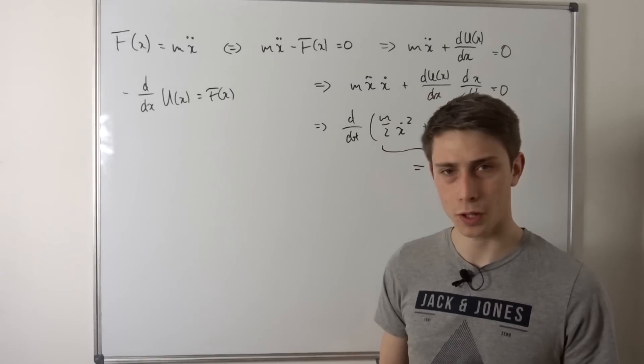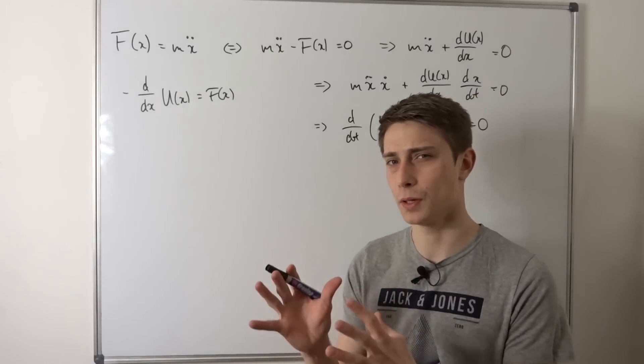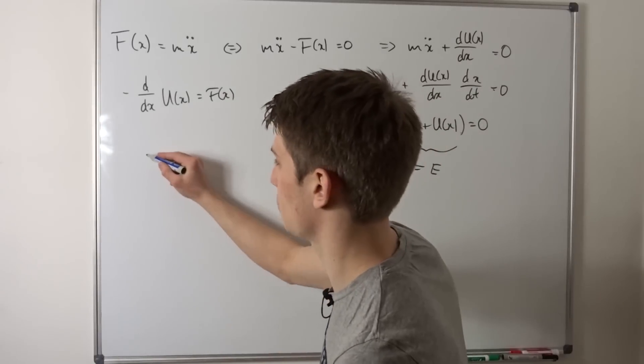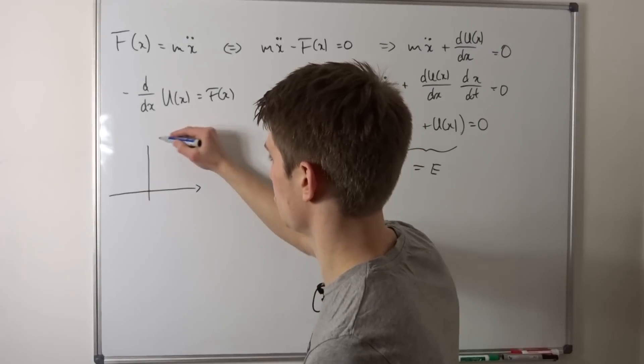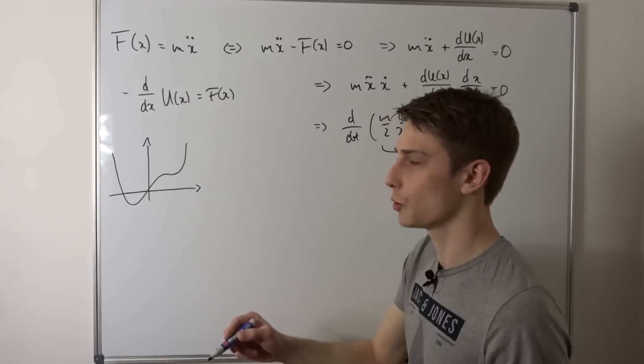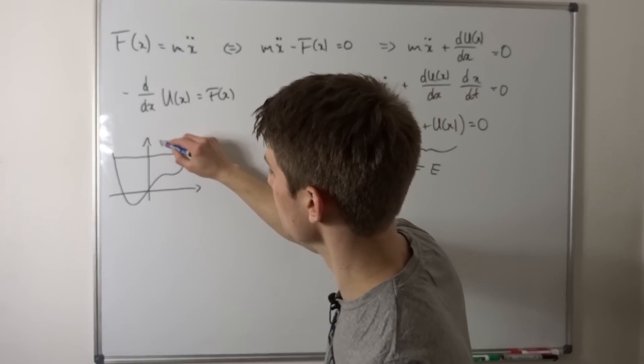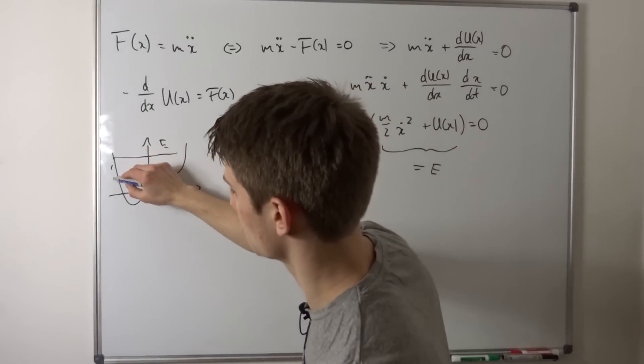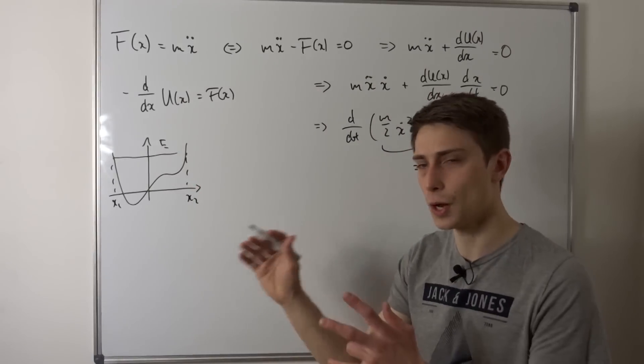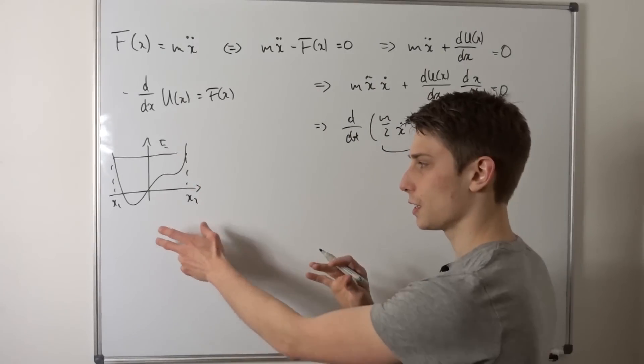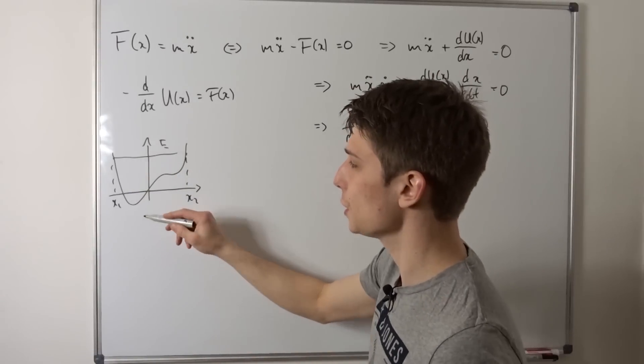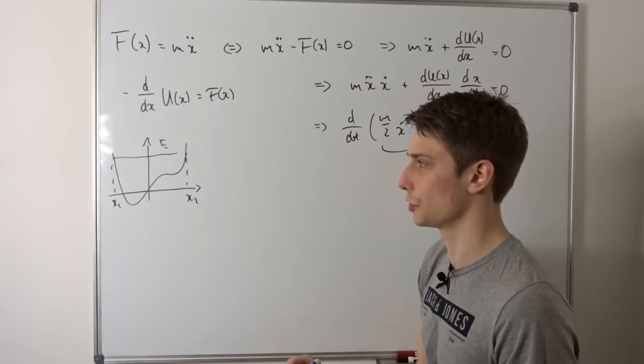So instead what we could do, we could for example solve this differential equation once again. But at first let's take a look at a little graph of some potential. So there are many possibilities how this potential could look like. For example, we could have something nice like this right here. And once again we have some total energy in here. And now we can see where our classical turning points are. So that would be x1 and we have x2. So one observation you could take in this whole thing is that we have a marble rolling up and down once again in this potential.